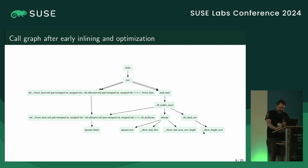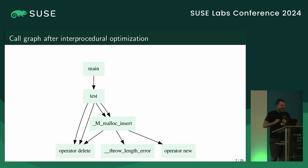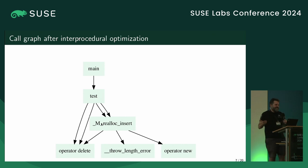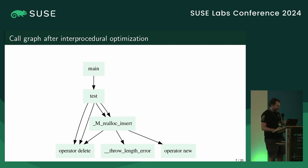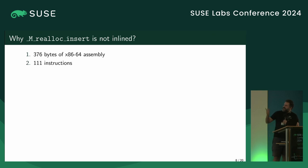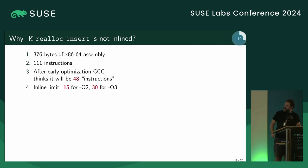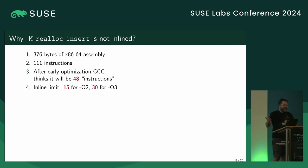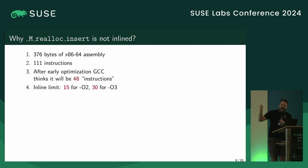The problem is that after the late optimization, we don't inline the realloc_insert function, but Clang does — and that's the root of the performance difference. I started to look into why we don't inline it. The implementation is something like 300 bytes, which at O2 level is probably a little too much to inline into every push. GCC estimates it will be around 40 instructions, and the thresholds are 15 for O2 and 30 for O3, so it's actually pretty far from the O2 inlining threshold.